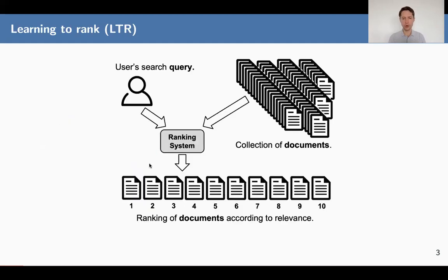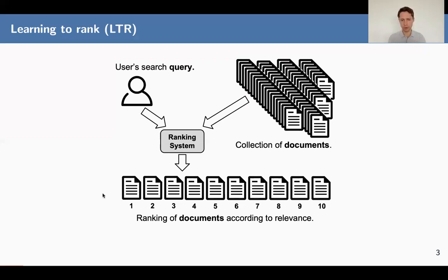If we go back to the standard picture of IR, we have a user query, we have a collection of documents, and then we have a ranking system to match the two. So far we saw different unsupervised methods like BM25 or LSI that could sort these documents according to the query and produce a ranking. In this set of videos we will discuss supervised and machine learning based methods to do that.